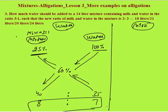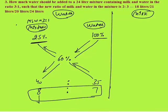So we must mix the mixture and water in the ratio 8 is to 7. Mixture should be 8 parts and water should be 7 parts. We are given that the volume of mixture is 24 liters. If 8 parts equals 24 liters, then 7 parts equals 21 liters. So 21 liters of water must be added.